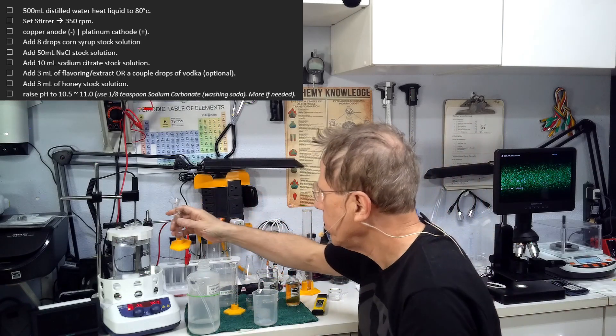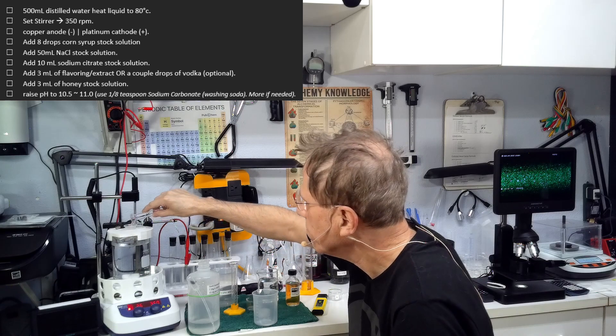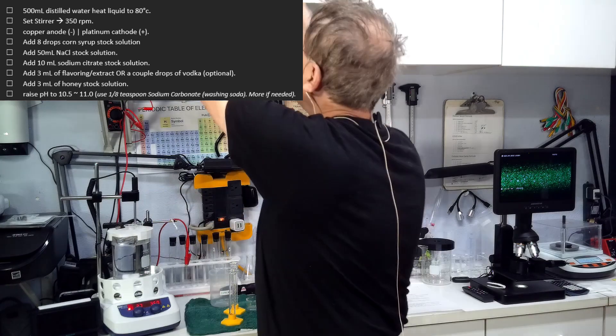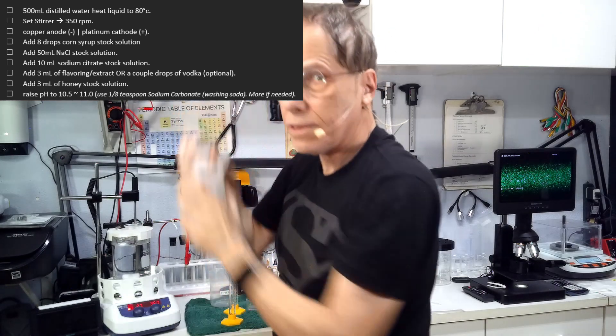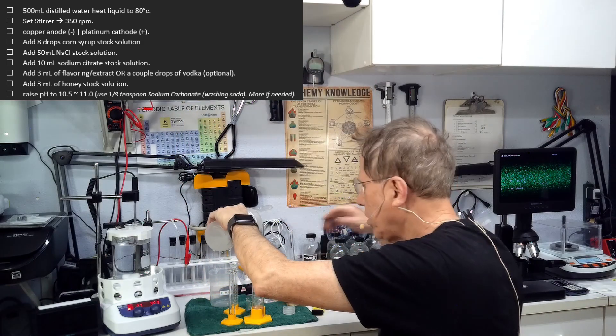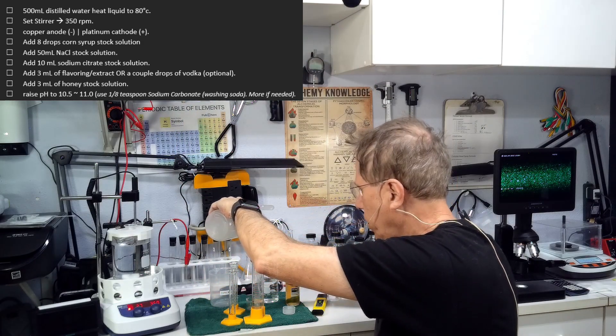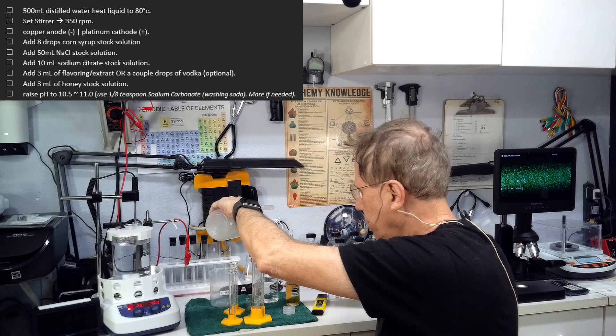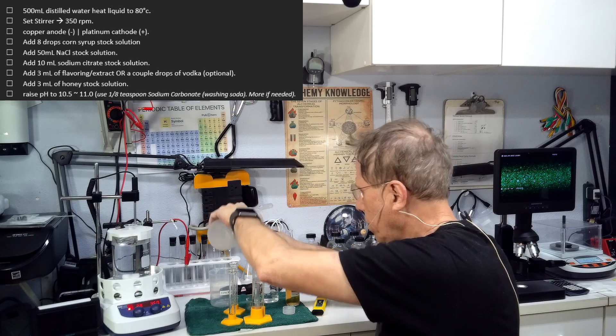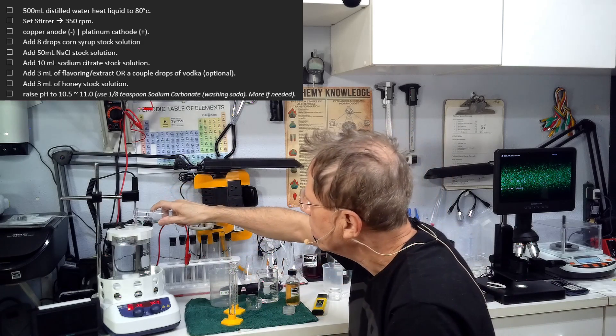First we're going to start with the gold formula. The gold formula calls for using our stock solutions, 10 milliliters of sodium citrate is going to go in there. Next NaCl, we're going to put 50 milliliters.